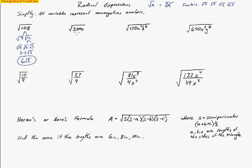The square root of 3,000. One number I should also look for is 100 — so if 100 goes into these numbers, take out that perfect square. The square root of 100 times the square root of 30 makes the square root of 3,000. 30 doesn't have any factors that are perfect squares — 5, 6, 3, 2 are not perfect squares — so we can't take out a perfect square there, but we can take the square root of 100, which is 10. So I have 10√30 as my answer.